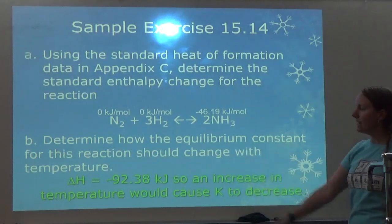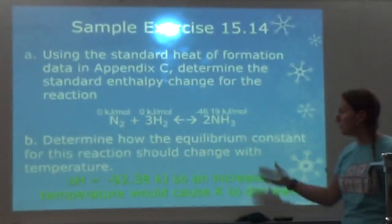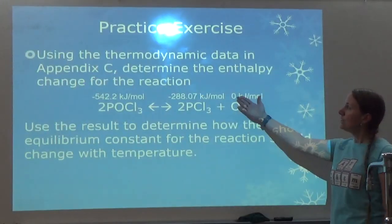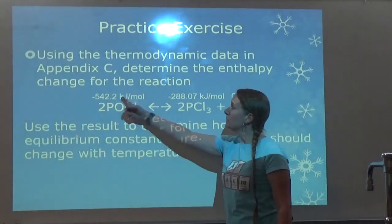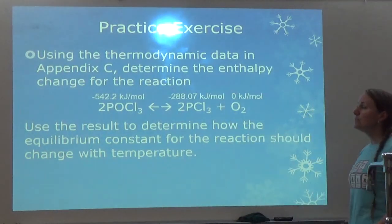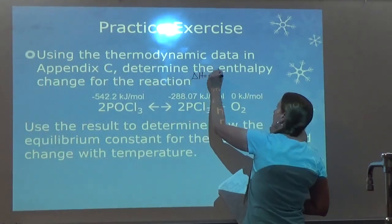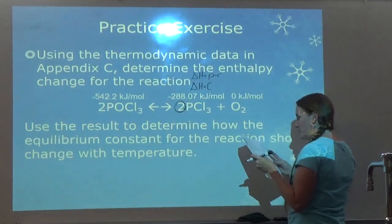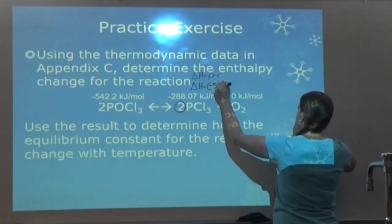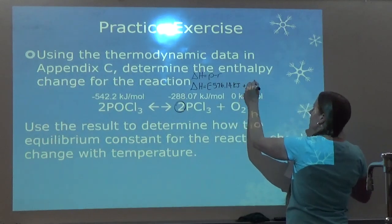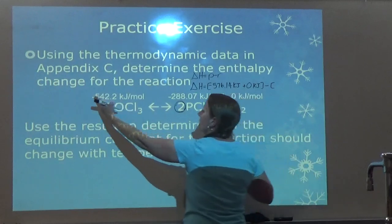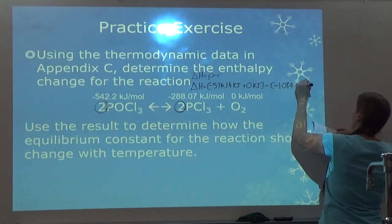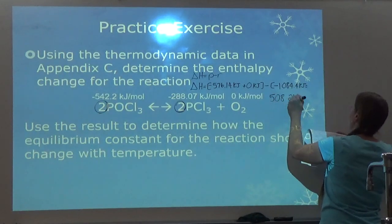For the next problem, delta H is products minus reactants. I take one mole of product at negative 288.07 kJ/mol times 2, giving negative 576.14 kJ. Then I subtract: zero for O2, minus negative 542.2 kJ/mol times 2, which is minus negative 1,084.4 kJ. That ends up giving 508.26 kilojoules per mole of reaction.